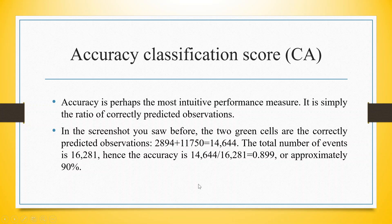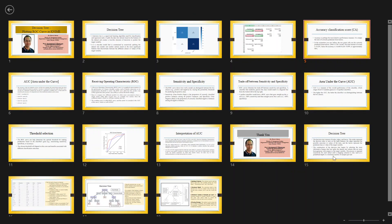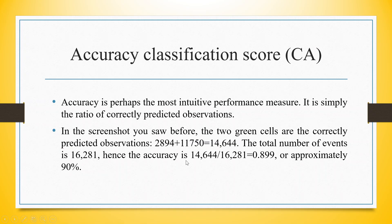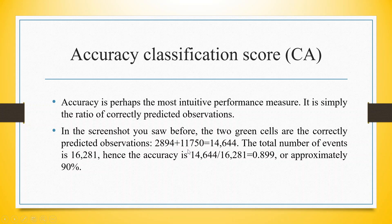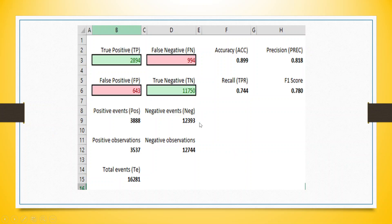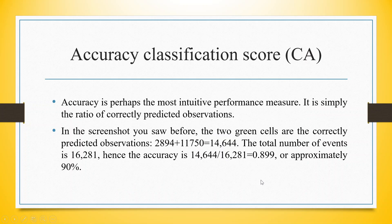Accuracy is perhaps the most intuitive performance measure — it is simply the ratio of correctly predicted observations. For example, true positive is 2894 — the kit correctly classified that the person has COVID. True negative is 11750 — the kit correctly classified that the person does not have COVID. So the accuracy score is 2894 plus 11750, that is 14644, divided by the total number of all four cells, giving 0.899. In 90% of cases, the classification is correct.